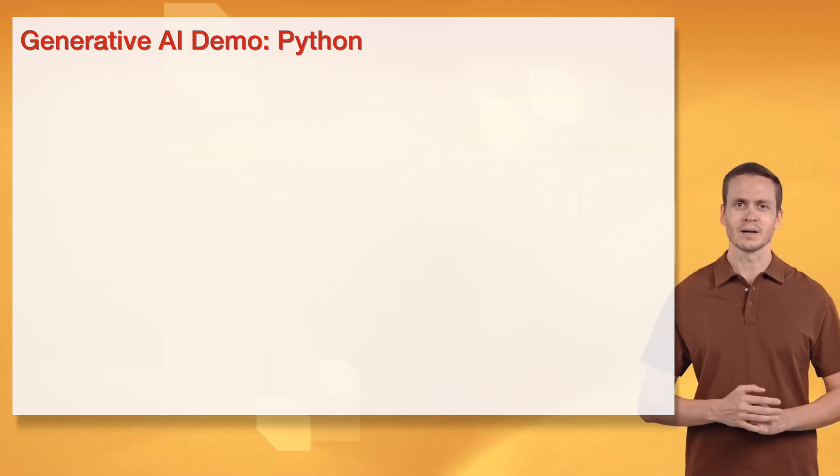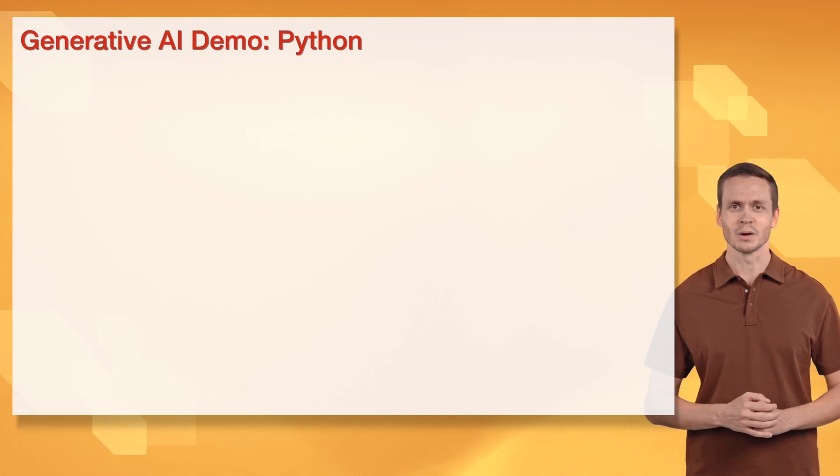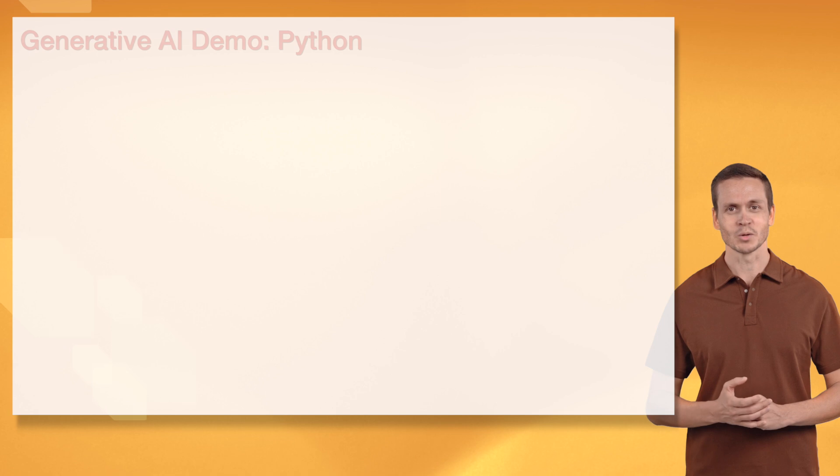We load MNIST, train a GAN with a generator and discriminator for 5 epochs, and generate realistic digits. The images show our model's creativity. I'm so thrilled to see it work! Let's advance art! This is AI in action! Let's keep coding!